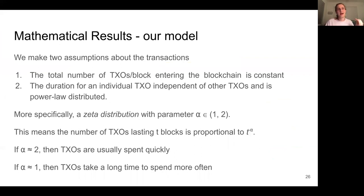In terms of mathematical results, we make two assumptions about the transactions that we base our proofs on. One is that the total number of transactions per block entering the blockchain is constant. And this is based on the fact that Bitcoin has a maximum block size. So in Bitcoin, it's impossible for more than a certain number of transactions to occur in a particular block. And the other is that the duration for an individual transaction is independent of other transactions and is power law distributed. And that comes from the observation that this is how Bitcoin transactions appear to be in real life.